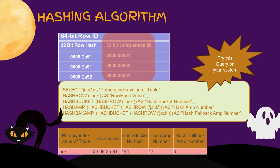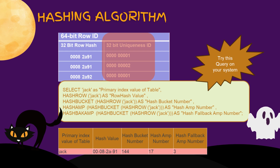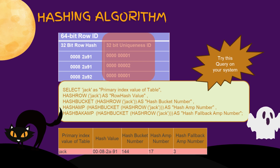It's not compulsory that every user will get the same value at their end. You can try executing the above query using SQL Assistant or any other tool and learn how the primary index value behaves on your system. You need not use the same Jack value — you can choose any integer or string combination. If it's a composite primary index, you can group both values together and hash them.